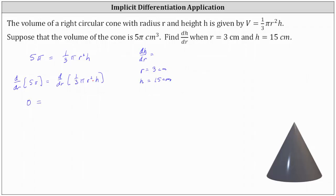So applying the product rule, we have the first function of one-third π r squared times the derivative of h with respect to r, which is dh/dr, which we're trying to solve for.